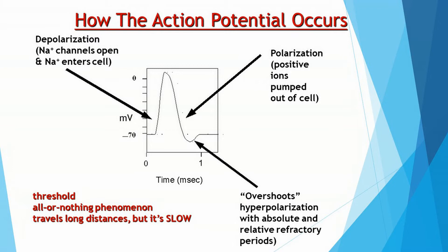As an action potential occurs and sodium with its positive charge floods into the cell, the cell is becoming more positive inside than outside. It goes from minus 70 millivolts, minus 60, minus 50, minus 40, all the way up to zero and then a little above — maybe even up to positive 15 millivolts.